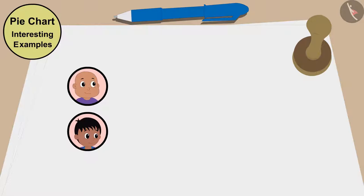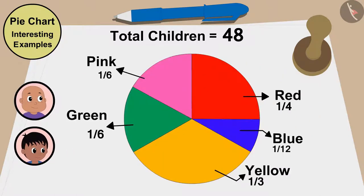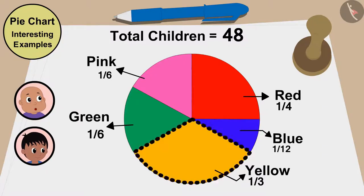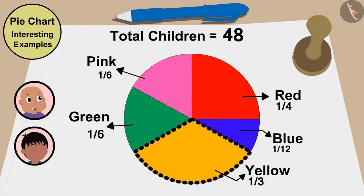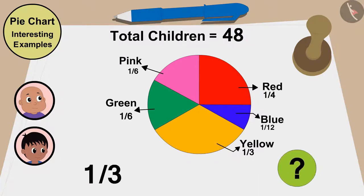Raju and Bablu asked 48 children about their color choice and made such a pie chart. Look, Raju. After seeing this pie chart, it seems that the largest number of children like yellow. This is one third of this pie chart. But how do we know how many children like this color?